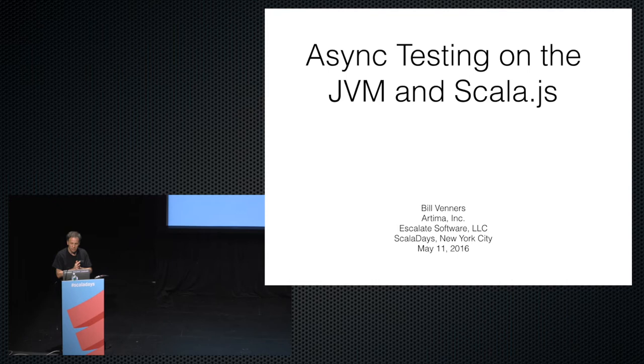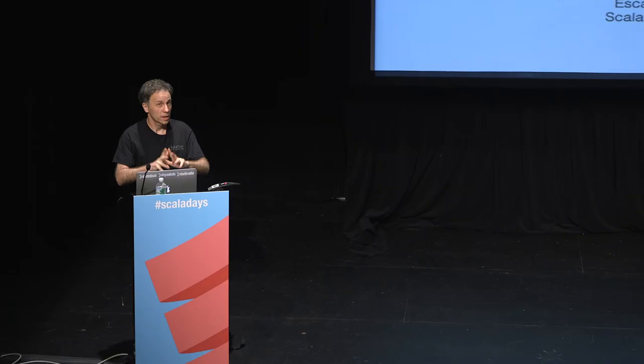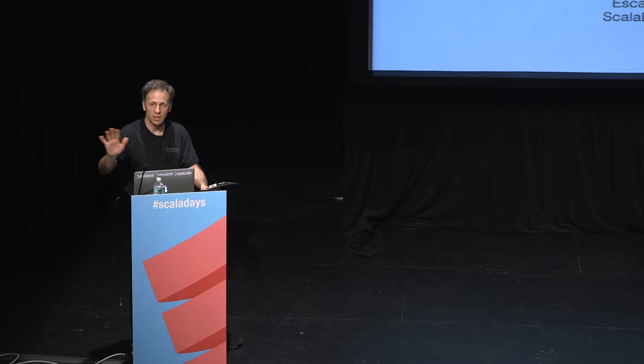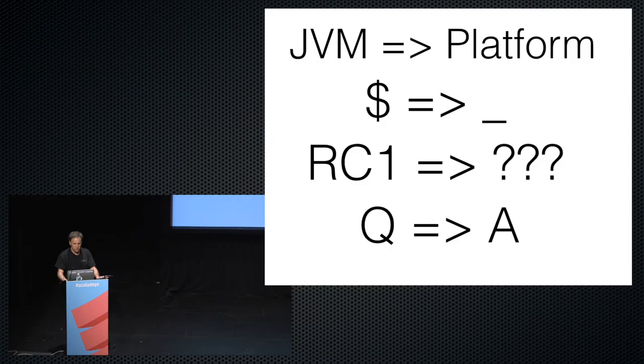This talk is about async testing on the JVM with ScalaTest, on both the JVM and ScalaJS. It's something new in ScalaTest 3.0, and 3.0 is on its way out. RC1 was released two days ago before the conference started, but it's not on the website yet because the ScalaDoc isn't ready. That'll come out in the next few days. Here's a little preview of what will be covered.